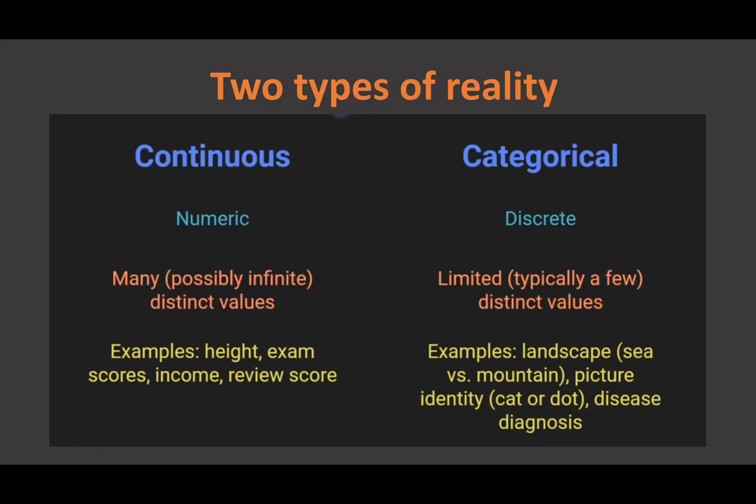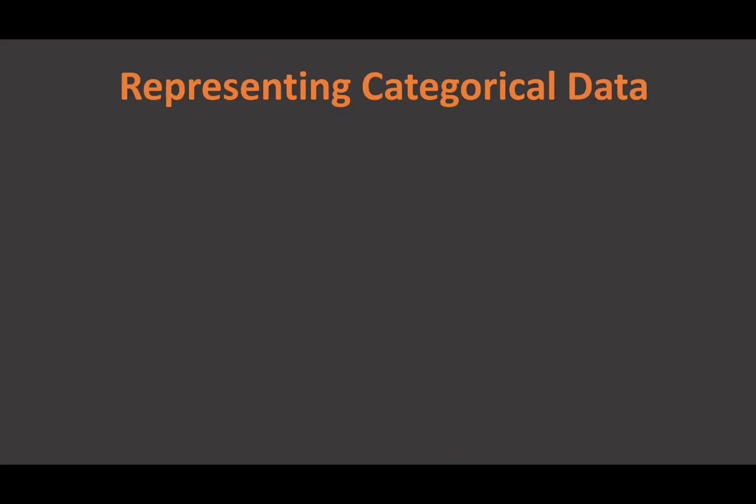Deep learning models actually learn from numbers, not from raw reality. So you have to convert reality into numbers first. That's why there are two types of reality: continuous and categorical. I hope you understand the difference between continuous and categorical data.